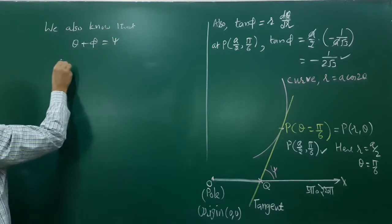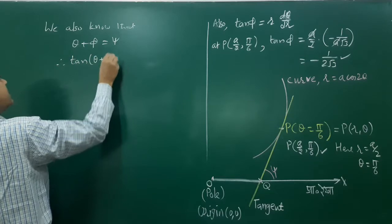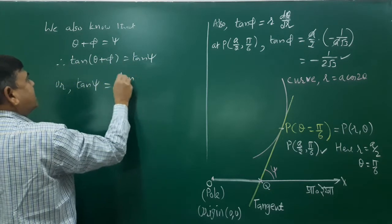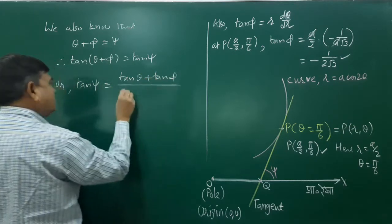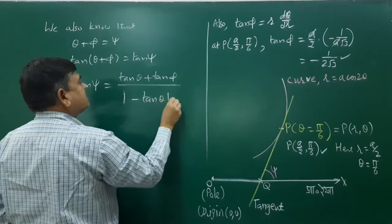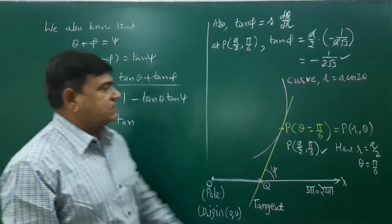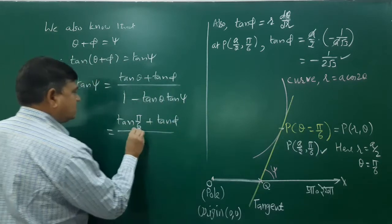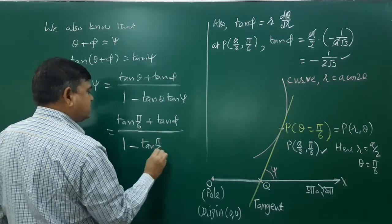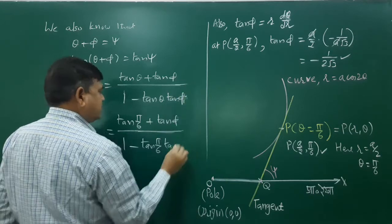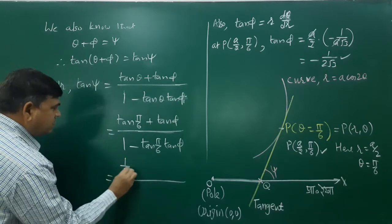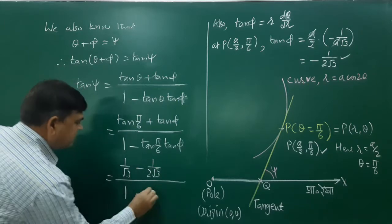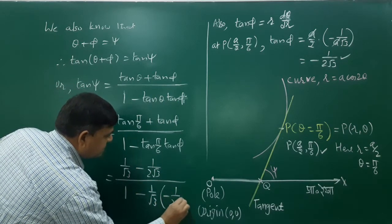We know that θ + φ = ψ, so tan(ψ) = tan(θ + φ) = (tan θ + tan φ)/(1 − tan θ · tan φ). Here θ = π/6, so tan θ = 1/√3, and tan φ = −1/(2√3). Substituting: numerator = 1/√3 − 1/(2√3), denominator = 1 − (1/√3)·(−1/(2√3)) = 1 + 1/6 = 7/6.